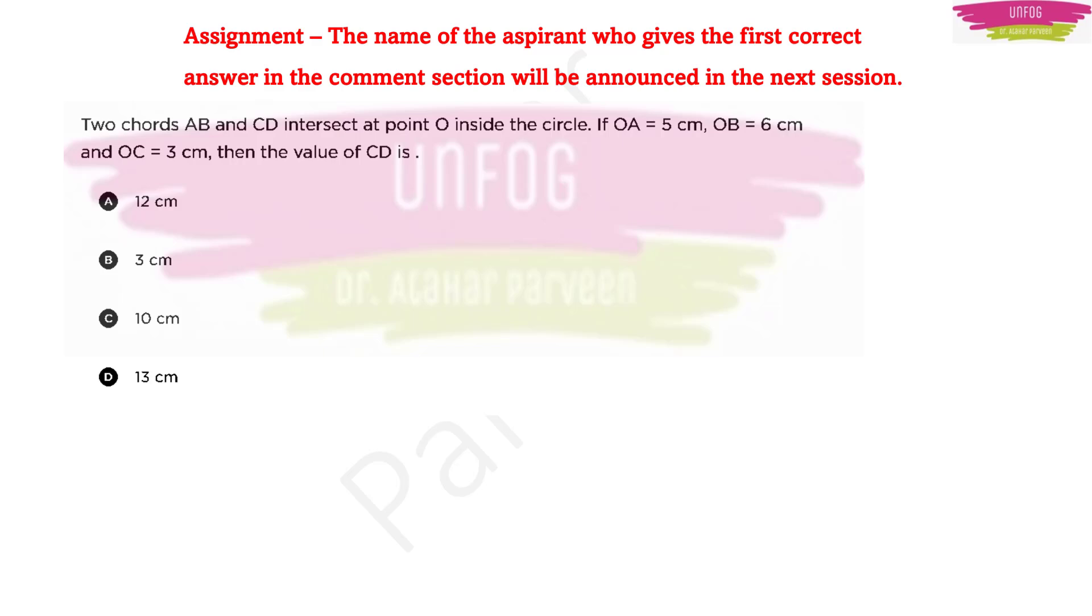The question was two chords AB and CD intersect at point O inside the circle. If OA is equal to 5 cm, OB is equal to 6 cm and OC is equal to 3 cm, then the value of CD is.